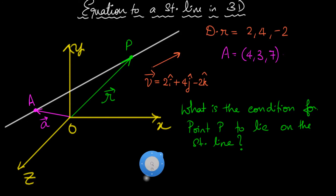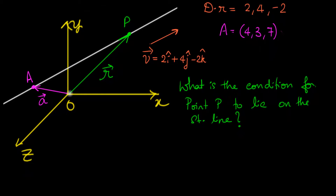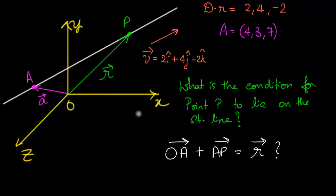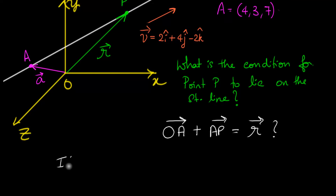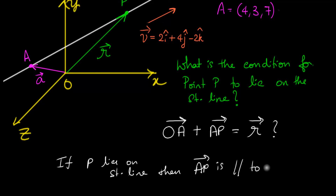If you remember vector addition, here's a simple idea: if you take vector OA and add it to vector AP, you get vector R. That holds for any triangle — except the key insight is that if point P lies on the straight line, then AP is parallel to vector V. So if R is the position vector of point P lying on the straight line, then AP being parallel to V is the condition that P lies on the straight line.